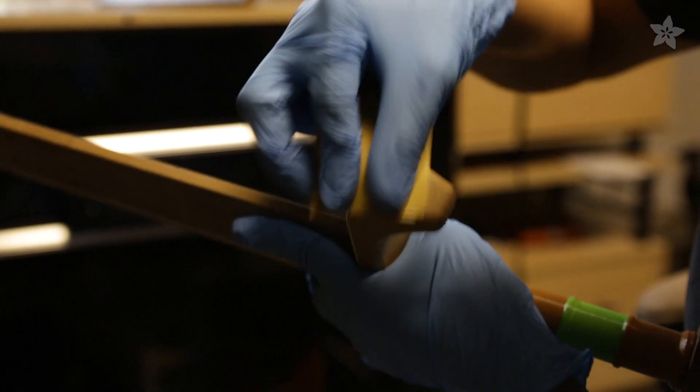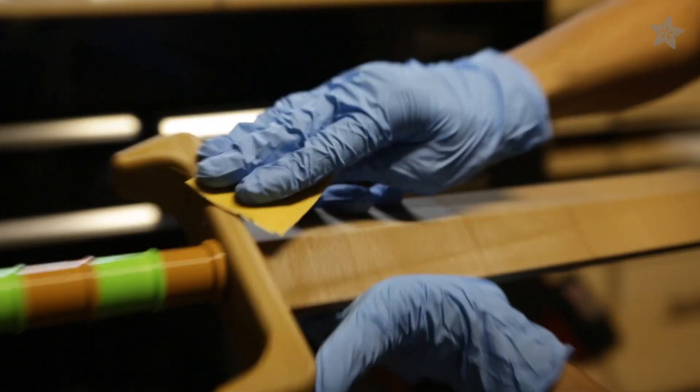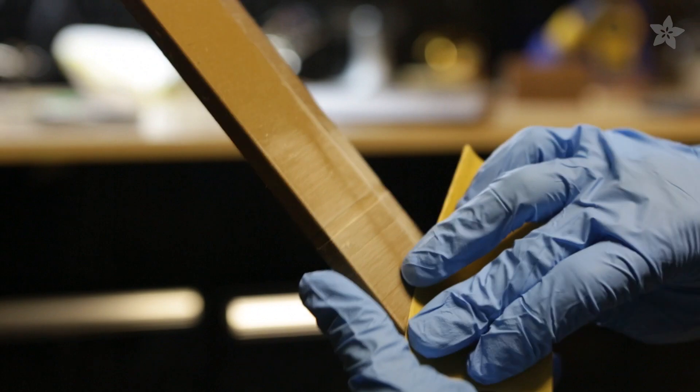First, we'll start off by sanding down all the parts using 230 grit sandpaper. Make sure to sand down all the small spaces.